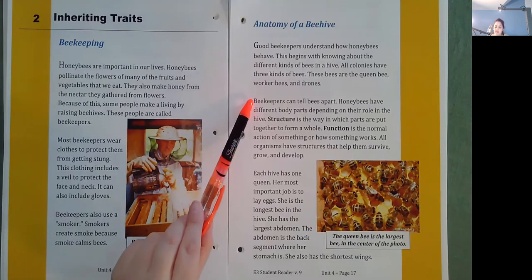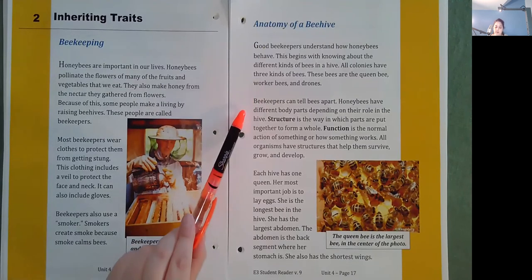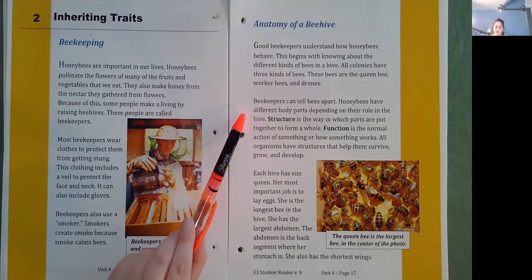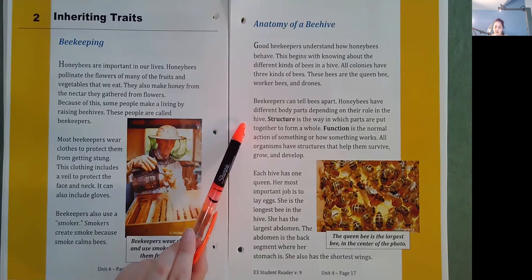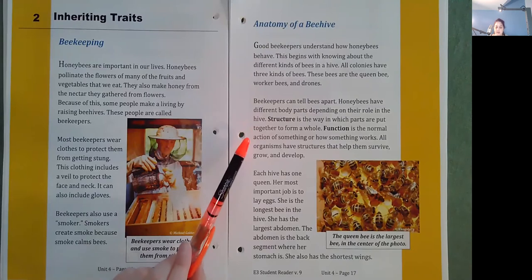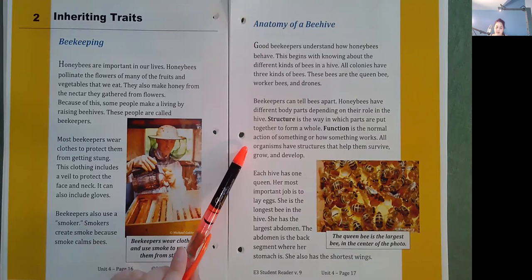Beekeepers can tell bees apart. Honey bees have different body parts depending on their role in the hive. Structure is the way in which parts are put together to form a whole. Function is the normal action of something or how something works. All organisms have structures that help them survive, grow, and develop.